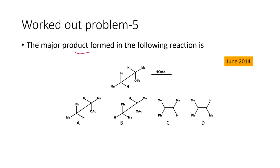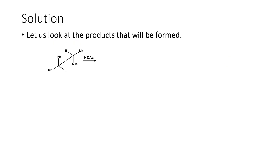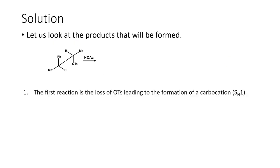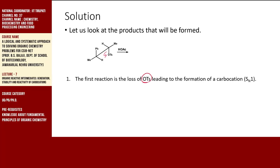Problem five: the major product where an OTs group is replaced by acetate. The OTs compound is treated with acetic acid. The nucleophile OAc⁻ attacks in a nucleophilic substitution reaction. OTs is a very good leaving group — it leaves easily, generating a carbocation. This is an SN1-type mechanism.